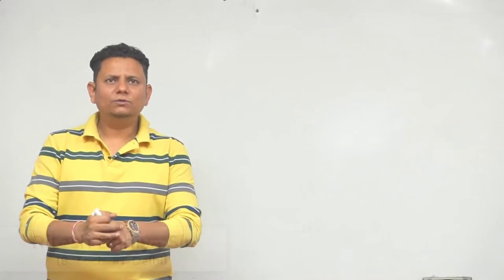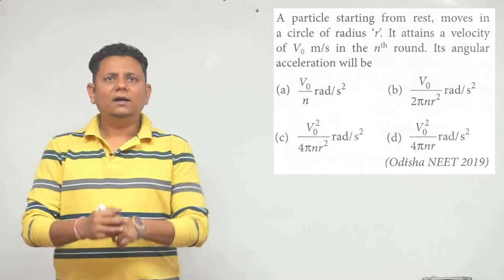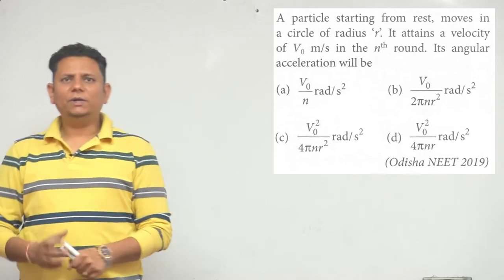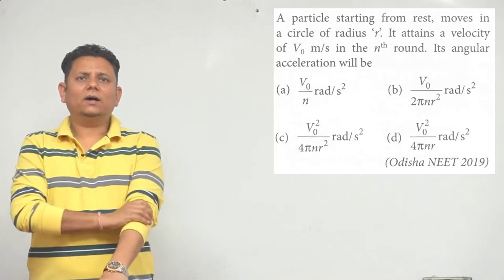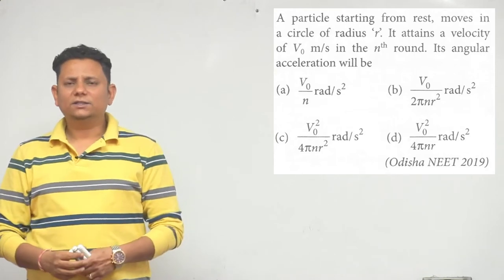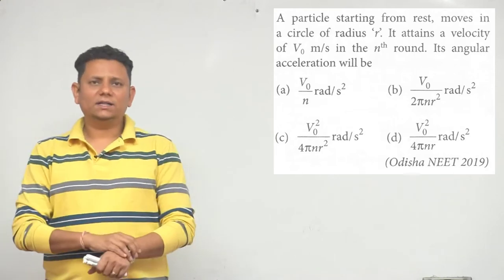Next question: A particle starting from rest moves in a circle of radius r. It attains a velocity of v0 meters per second in the nth round. Its angular acceleration will be?